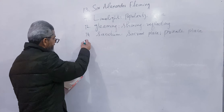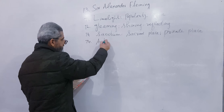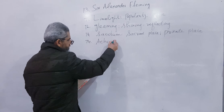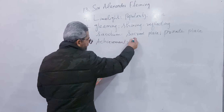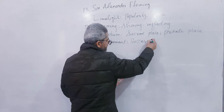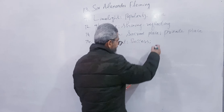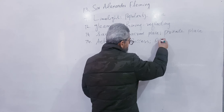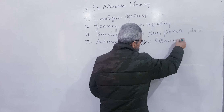Number 74: Achievement — kamyabi (success). Write success, attainment.